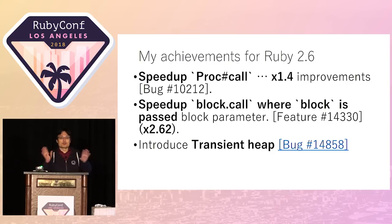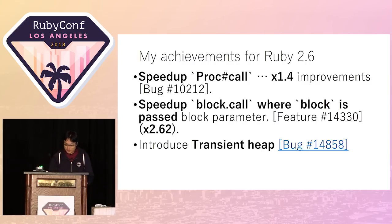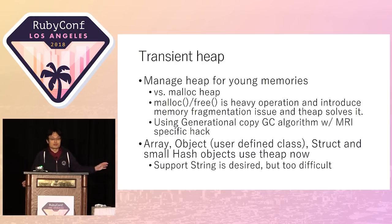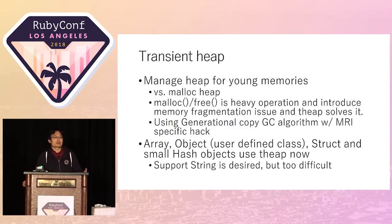This is not such a big feature. I want to show you a more significant feature: the transient heap. Transient heap is a new memory management mechanism. Ruby uses malloc and free functions to allocate and free memory.